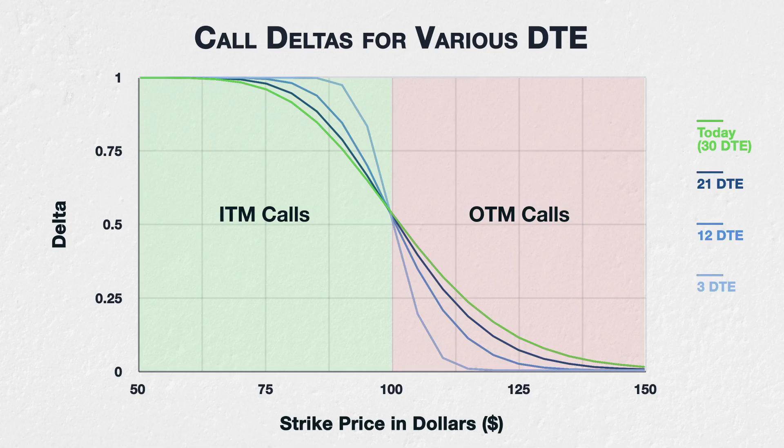As a corollary, as time passes, the delta for in-the-money call options will tend towards 1, and the delta for out-of-the-money call options will tend towards 0. Similarly, the delta for in-the-money put options will tend towards negative 1, and the delta for out-of-the-money put options will tend towards 0.